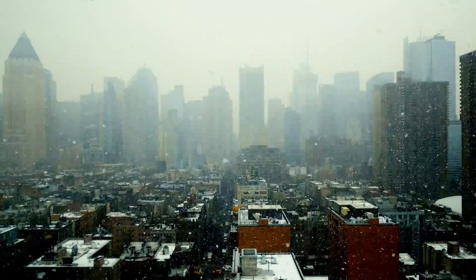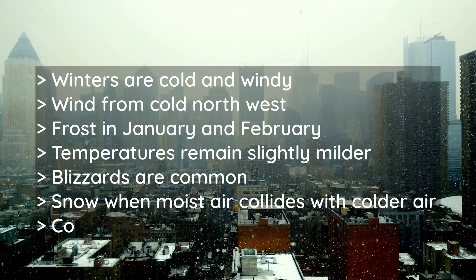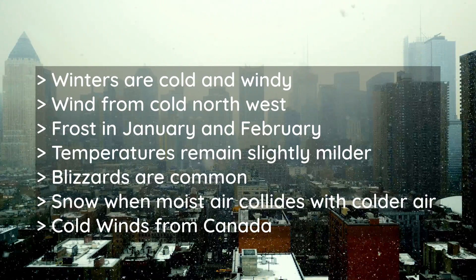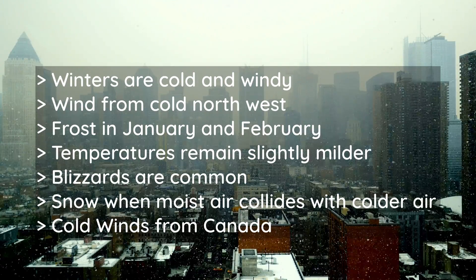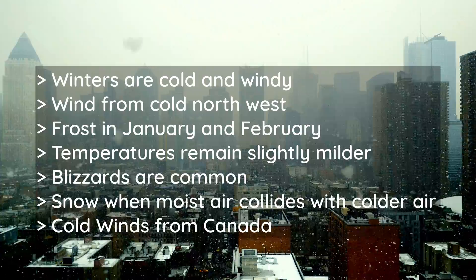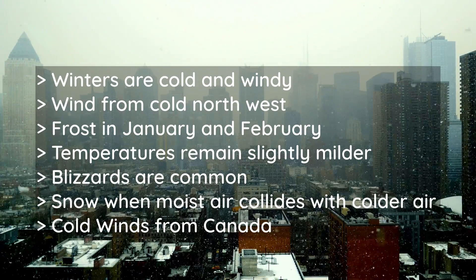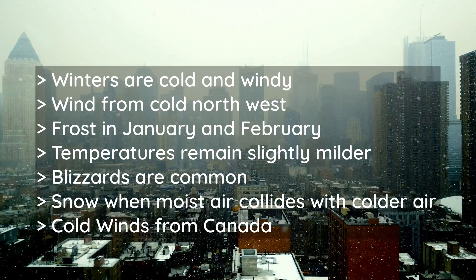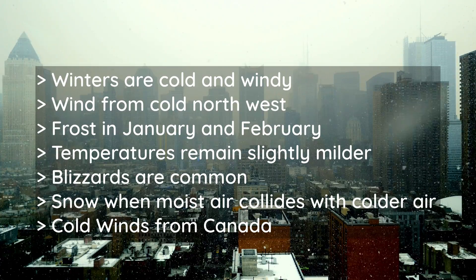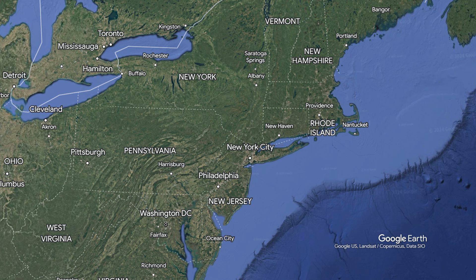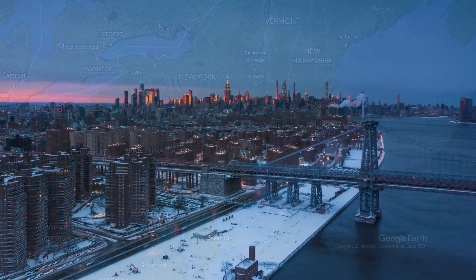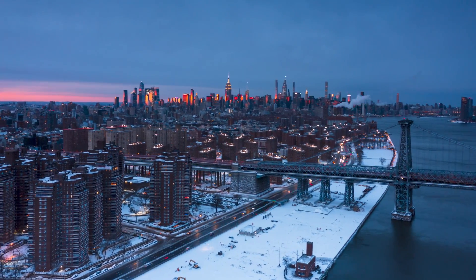Winters are cold and windy, mainly blowing from the cold northwest. Temperatures often drop below freezing, especially in January and February. But the proximity of the ocean and the many buildings ensure that temperatures remain slightly milder than further inland. Blizzards are common, and the city can receive a large amount of snow when moist air from the Atlantic Ocean collides with colder air from the continent. Winds from Canada can cause extremely low temperatures at this latitude.